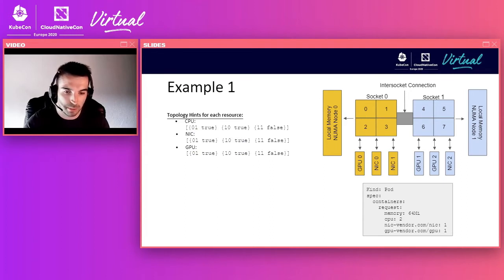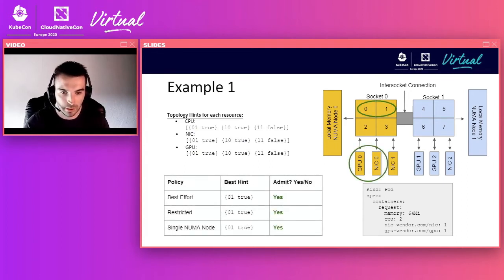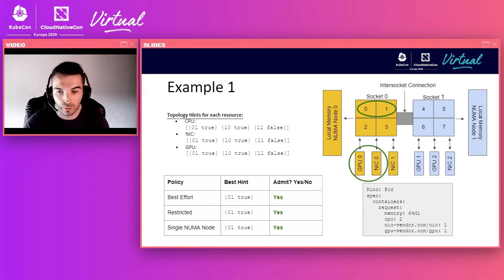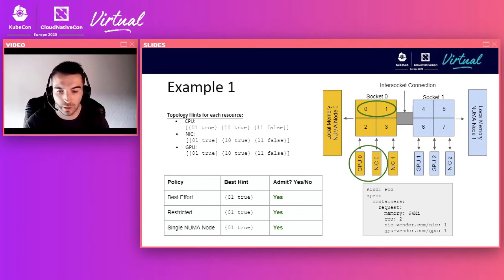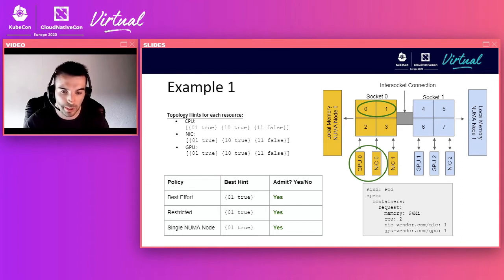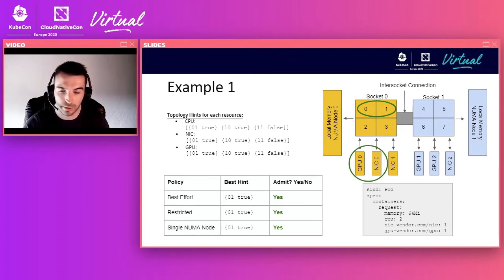Once all merged hints are compiled, the policy selects a best hint. In this scenario, the best hint for all three policies has bitmask 01 true semantics — allocate from NUMA node 0 — and is a preferred allocation. The best effort, restricted, and single-NUMA-node policies are all satisfied, and the pod is admitted successfully under all three policies with all CPUs and devices allocated from NUMA node 0.